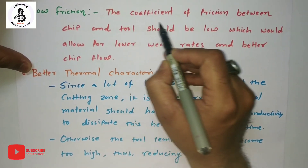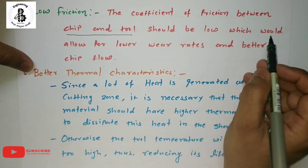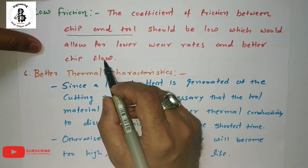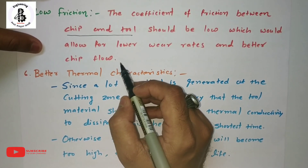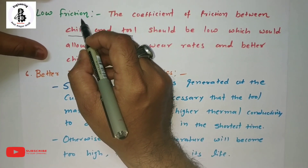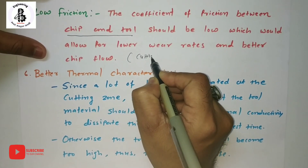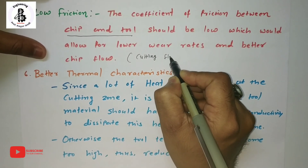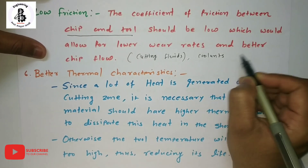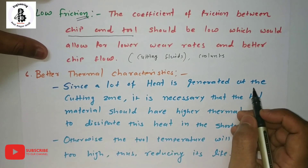The fifth characteristic is low friction. The coefficient of friction between the chip and tool should be low, which allows for lower wear rates and better chip flow. Controlling friction also helps control tool wear. Cutting fluids or coolants are used to help control friction.